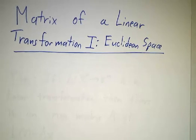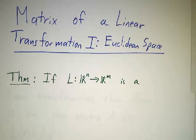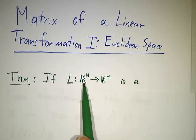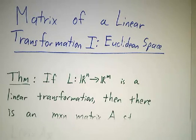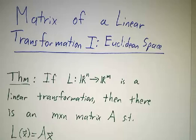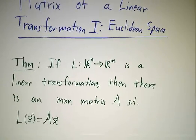We've gone over a lot of examples of linear transformations. Now we're going to talk about a particular kind: linear transformations in Euclidean space. These are things that are mapping Rn to Rm. The big deal about them is that every linear transformation in Euclidean space is multiplication by a matrix.